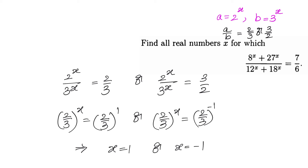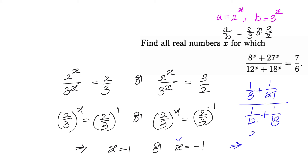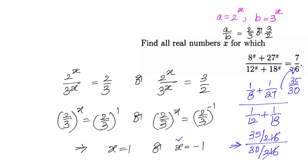We already know x = 1 works: (8 + 27)/(12 + 18) = 35/30 = 7/6. Let us verify x = −1: (1/8 + 1/27)/(1/12 + 1/18). Taking LCM gives (35/216)/(30/216) = 35/30 = 7/6. So x = −1 also satisfies the equation.